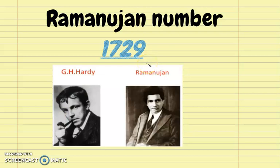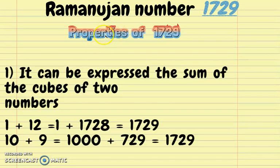I am going to explain each property in detail. The first property of 1729 is that it can be expressed as the sum of the cubes of two different numbers. So 1³ + 12³ gives us 1 + 1728, which equals 1729.